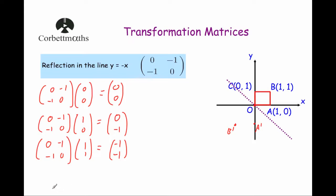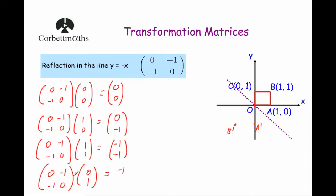And finally, the point at C, which is (0, 1). Take the matrix 0, -1, -1, 0, and multiply by the point (0, 1). Multiplying the first row by the column: 0×0 = 0, -1×1 = -1. The second row: -1×0 = 0, 0×1 = 0, adding them together is 0. So that gives the point (-1, 0). And as you can see, that's where it would be if it was reflecting in the line y = -x.